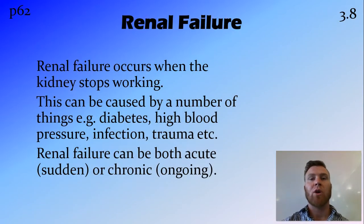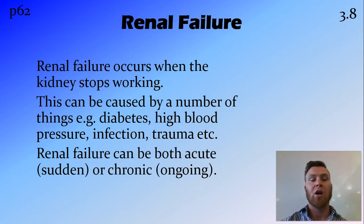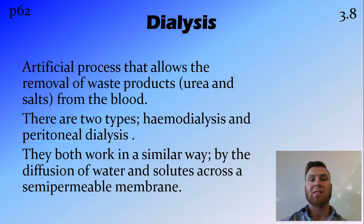The word renal means the kidneys or relating to the kidneys. Renal failure is when the kidneys stop working, and this can happen suddenly or acutely where something like infection or trauma causes it, or it could happen over time as they get worse and worse through high blood pressure or diabetes. Once those kidneys stop working they're no longer able to remove the waste products from the blood, and therefore we need an artificial process that is able to remove these waste products — in particular urea as well as excess salts in the blood.